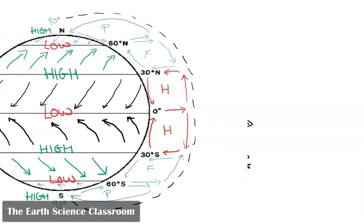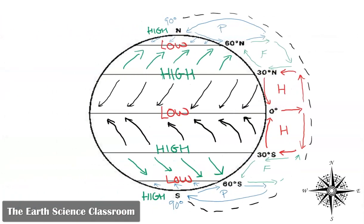So we discussed the three cells, discussed the pressure belts that are created because of these three cells. We discussed the winds, the surface winds that you see on the diagram. We discussed the doldrums and the ITCZ. We discussed the horse latitudes. Now we've got to discuss the winds.